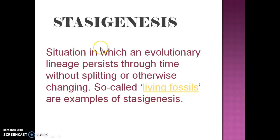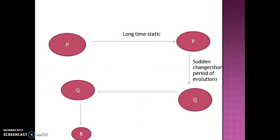It is a type of evolution which persists through time but there will be no splitting or lineage. These are called stasigenesis.